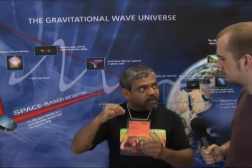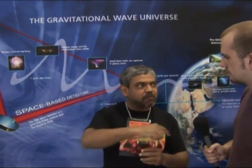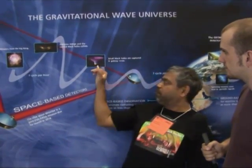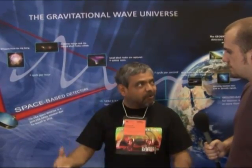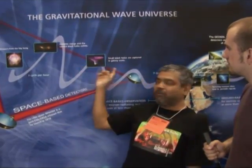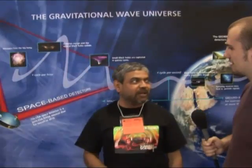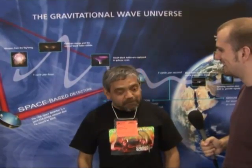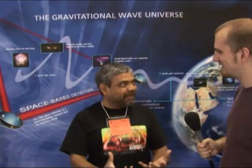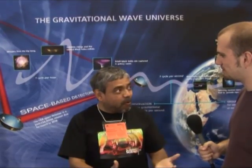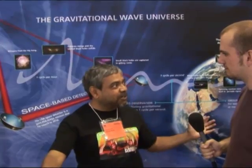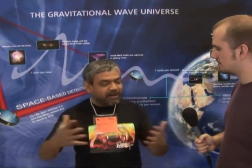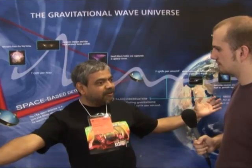In doing so, the small black hole goes around the space-time geometry of the big black hole and helps us to actually map the whole space-time around it — so it's like a stellar cartographer, like map making. And here we are opening a new window which actually maps the space-time geometry, not just of Earth or the solar system, but of the entire universe.